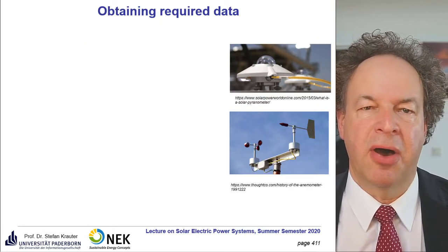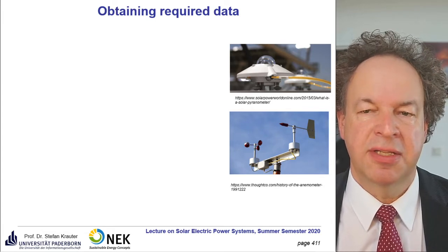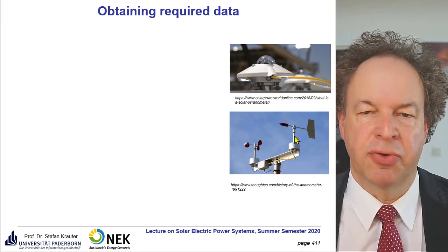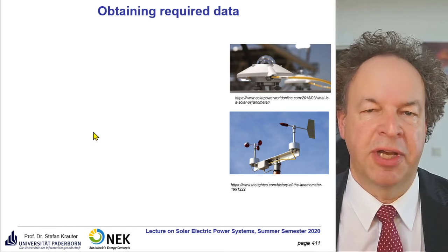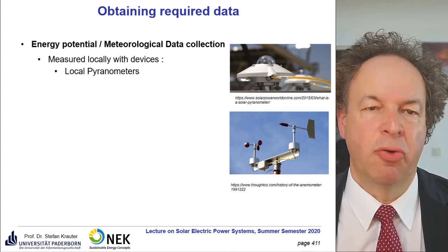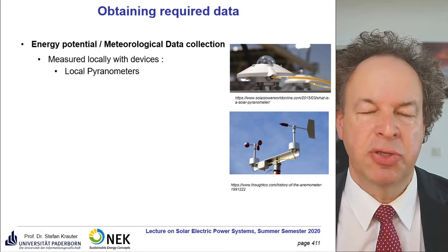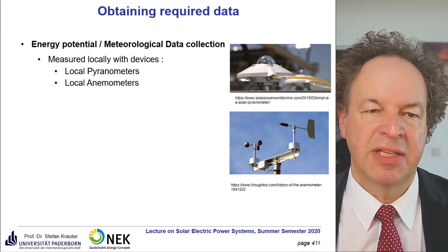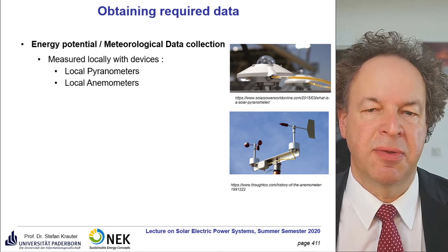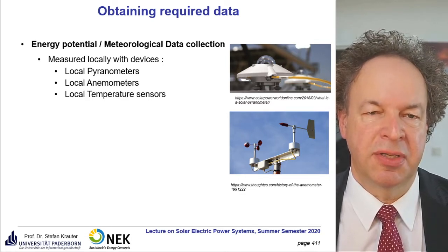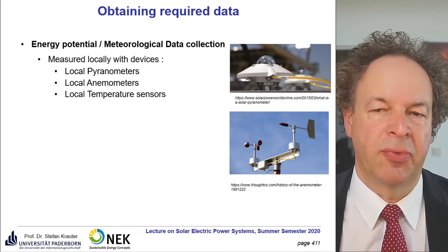For obtaining required data, remember the chapter where we discussed irradiance. We have here a pyranometer — we measure it ourselves. If you have a second source such as wind, you should also measure the wind potential. Best is local pyranometers on-site, but you should measure for a long time — at least one year. The same applies for local anemometers. For wind, because potential changes, you should measure longer than one year, preferably around 10 years. Temperature sensors are also important because temperature influences system performance, as you know from the performance ratio.